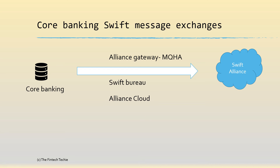Looking at the Alliance Gateway more closely — one must understand that a Swift message doesn't directly go from core banking to the network. It goes through additional scrutiny of a user who sits in front of a terminal, who authorizes the message before it goes out.